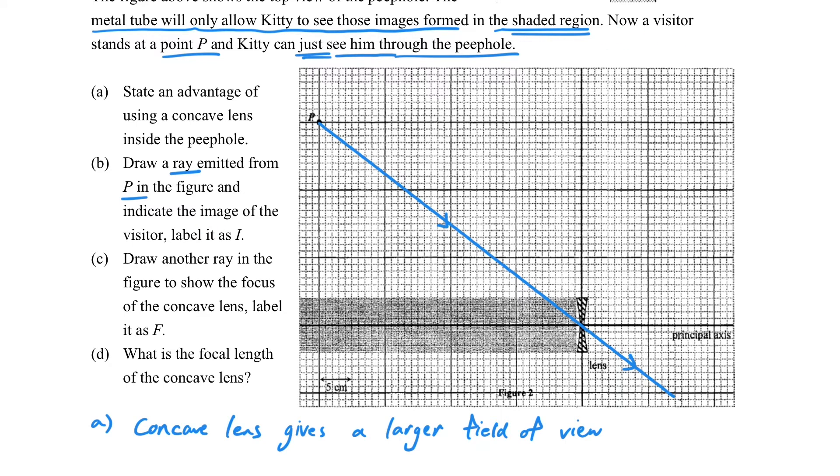So look at the question again. It says that Kitty has just seen him. Just see him means that the image is formed inside the shaded area, and just see him so it's formed on the edge of the shaded area. So this is the position of the image.